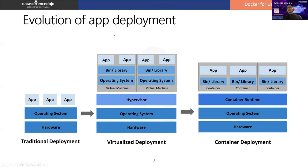Let's look at the evolution of app deployment. In traditional deployment, before there was a hypervisor, we used to install everything directly — and there were problems. Then we moved to virtualized deployment. Some of you may have experience installing VMware and running virtual images, like running Linux on Windows. But that can become very heavy when you try to run a Linux image on a VM.